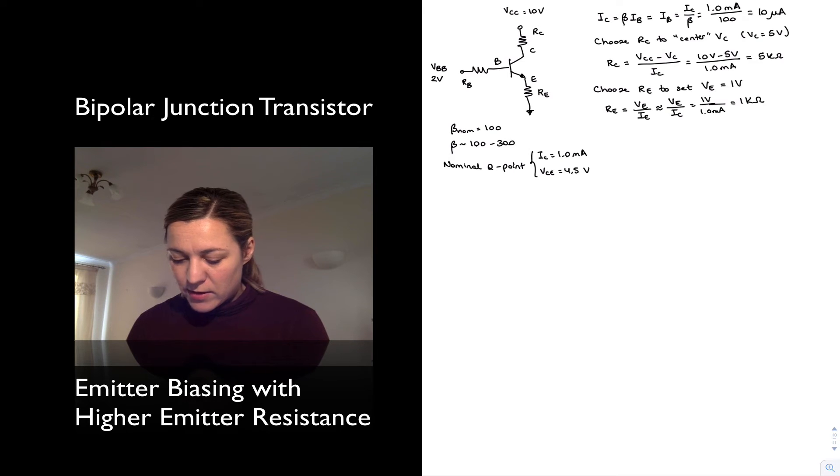And then my base resistor is going to be the same as in the previous case where we had the base supply set to 2 volts, but let's redo it. Choose RB to set IB equals 10 microamps. By Ohm's law, RB is equal to VBB minus VB divided by IB.